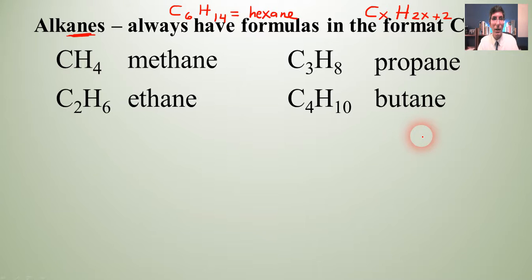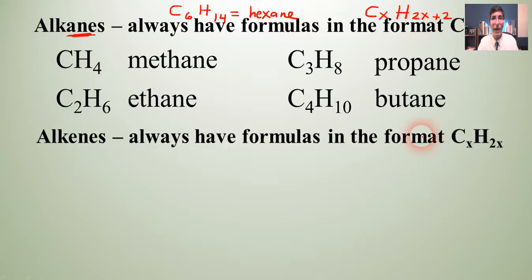Now, we have another class of organic hydrocarbons called alkenes. And they always have formulas in the format CXH2X. And so notice that since they're alkenes, their names will always end with -ene, E-N-E. So you've got to be very careful with the pronunciation here. -ane and -ene, you have to be very specific as to how you pronounce these.